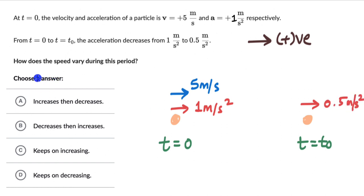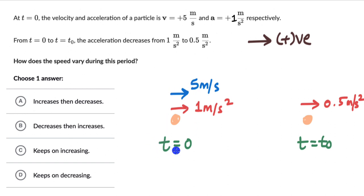Now let's look at the options — we need to think about how speed is changing. The first option says speed increases and then decreases. Speed will increase when the acceleration and the direction of velocity are both in the same direction. We see that at t = 0: acceleration is to the right and velocity is also to the right. This acceleration is supporting the velocity and increasing it.